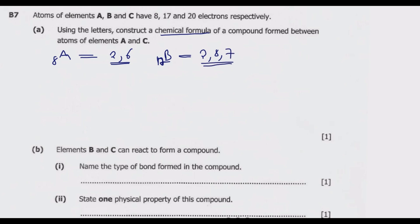Element C has 12 electrons. It is going to have 2 in the first shell, then 8 in the second shell — 2 plus 8 is 10, and 12 minus 10 means we remain with 2 outside. So the electronic configuration of C is 2, 8, 2.